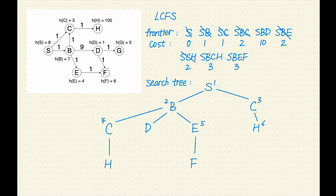Next, we'll explore all the paths with a cost of 3. SbEF and SbCh both have the lowest cost of 3. Based on our tie-breaking rule, let's remove SbEF from the frontier. F is not a goal, let's expand it. F has no successor. Let's keep going. Next, SbCh has the lowest cost of 3. Let's remove SbCh from the frontier. H is not a goal, let's expand it. H has no successor either. Let's keep going.